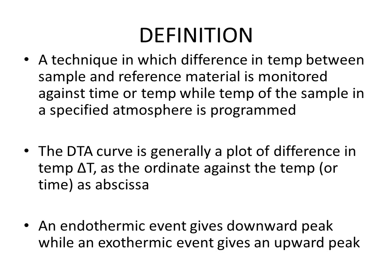The DTA curve is generally a plot of the temperature difference (delta T) as the ordinate on the y-axis, with temperature or time on the x-axis. An endothermic event gives a downward peak, while an exothermic event gives an upward peak. So in the DTA curve we get different peaks — upward peaks show exothermic processes while downward peaks show endothermic processes.